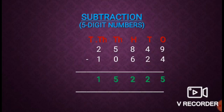9 minus 4 is 5. Tens place: 4 minus 2 is 2. Hundreds place: 8 minus 6 is 2. Thousands place: 5 minus 0 is 5. Ten thousands place: 2 minus 1 is 1. So, the difference is 15,225.